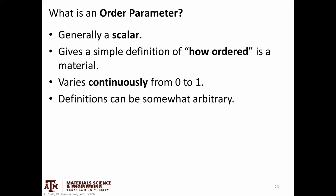There are a few rules that order parameters generally follow. They are usually scalars, and they vary continuously from some upper and lower bound. We define the order parameter to have an arbitrary upper bound — let's say it goes between zero and one, rather than something like 1.3 to 7.9. Zero is totally disordered, and one is completely ordered with no degrees of freedom in that aspect of the system. This gives us a simple way to quantitatively define how ordered a material is.